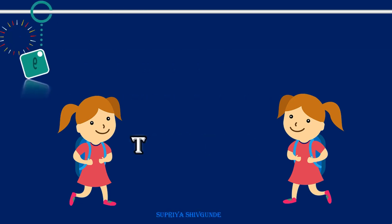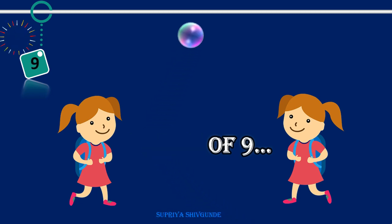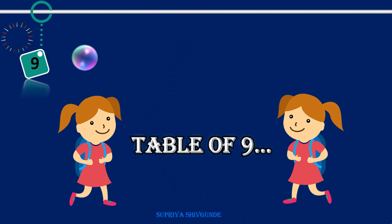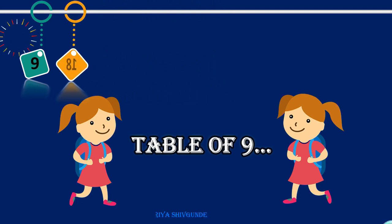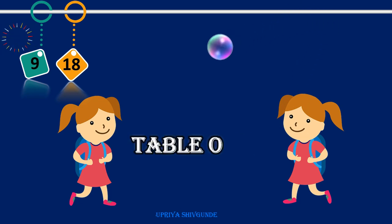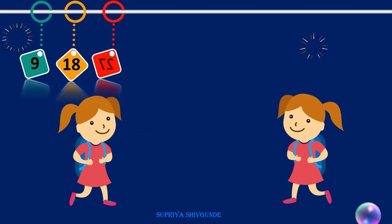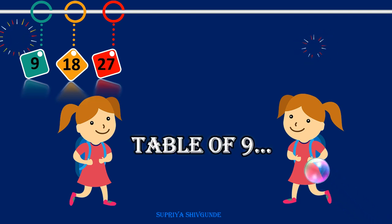Nine ones are nine. Nine twos are eighteen. Nine threes are twenty-seven.